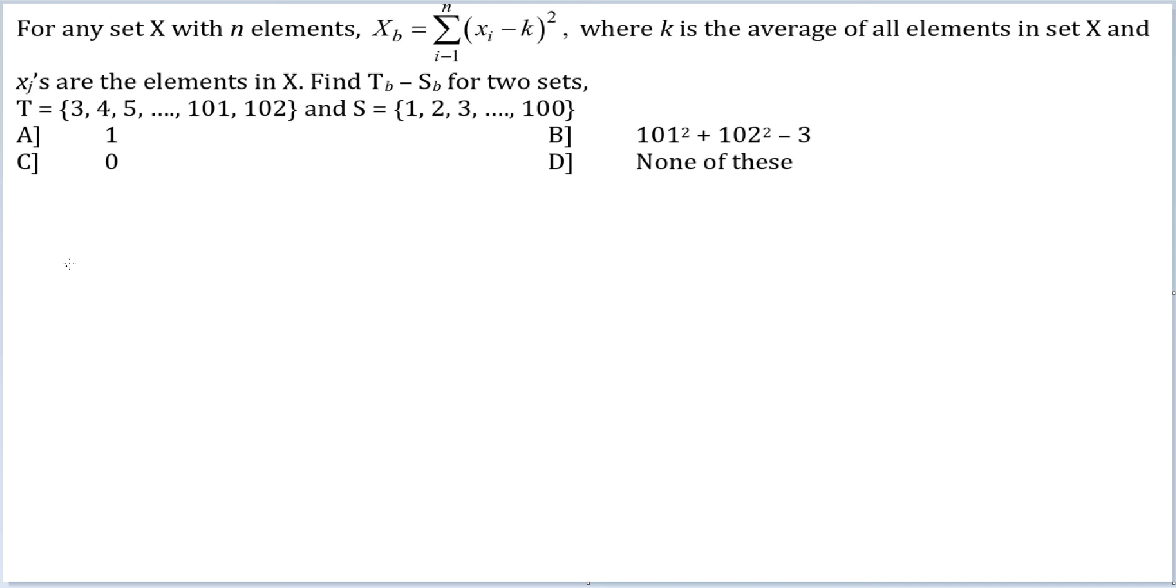Okay, let's do this. T_D will be equal to, the average of this set would be 52.5, so 3 minus 52.5 whole square plus 4 minus 52.5 whole square up until 102 minus 52.5 whole square.